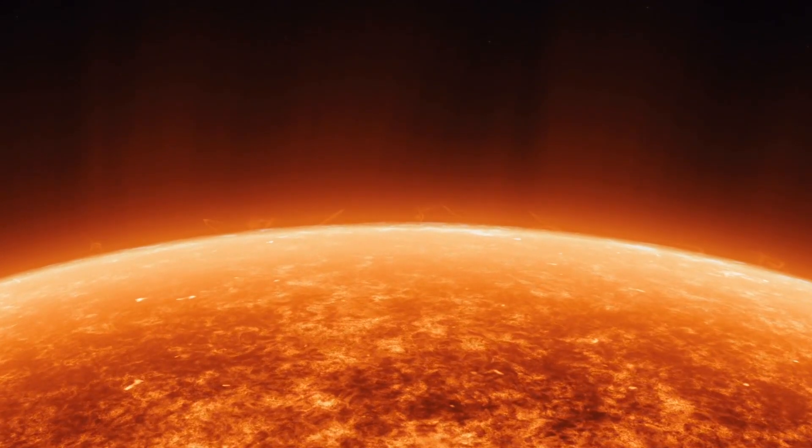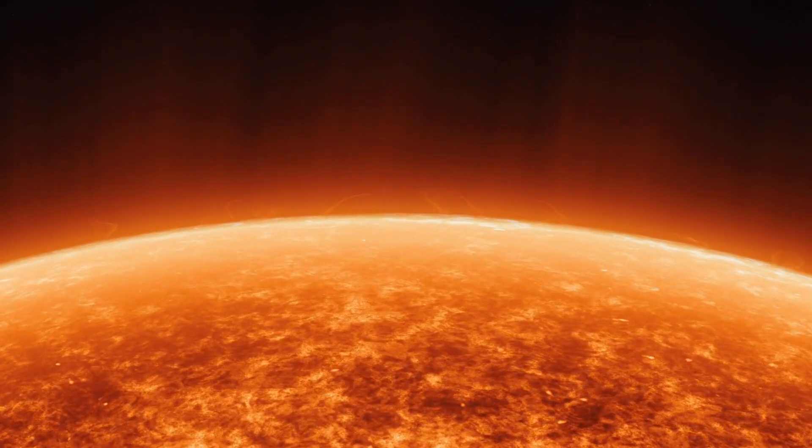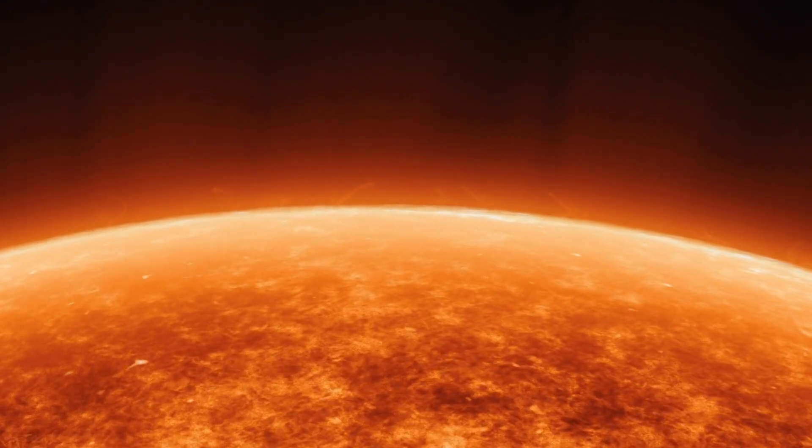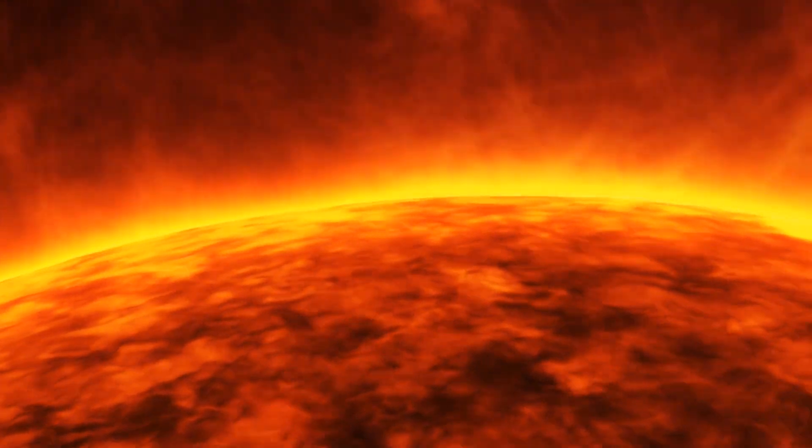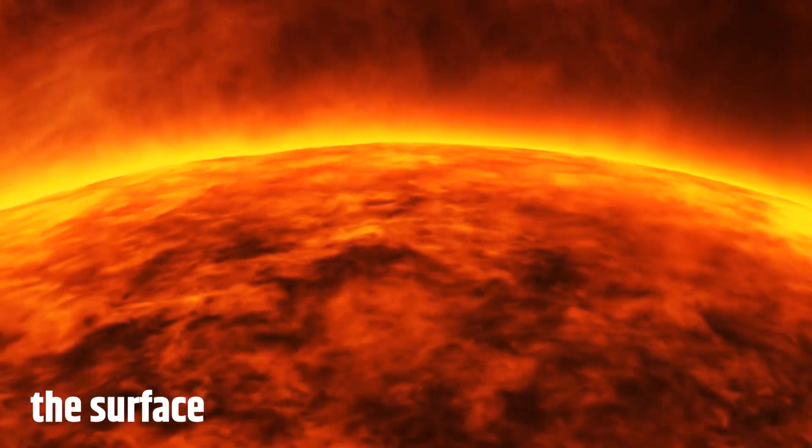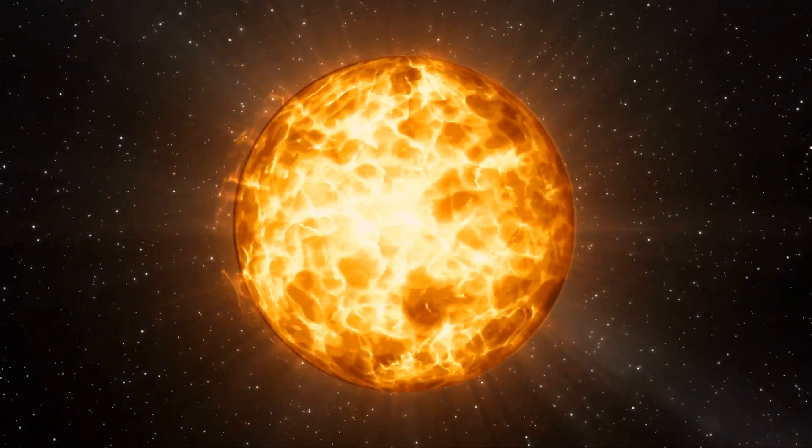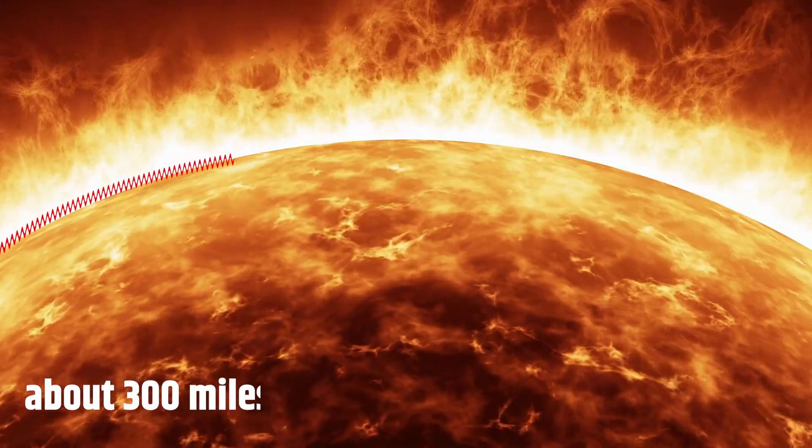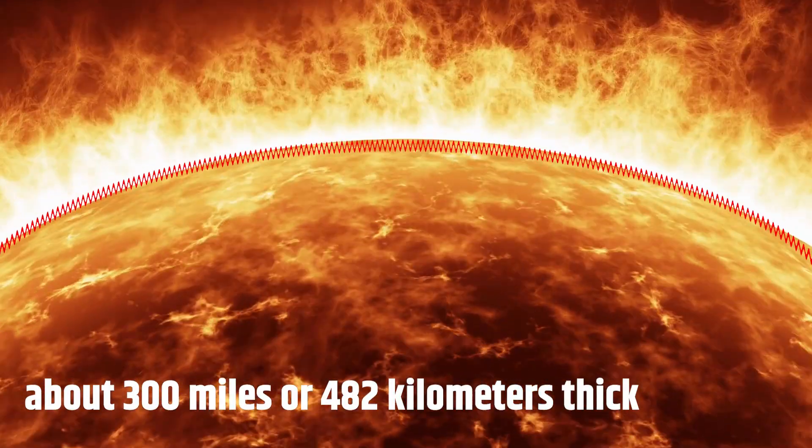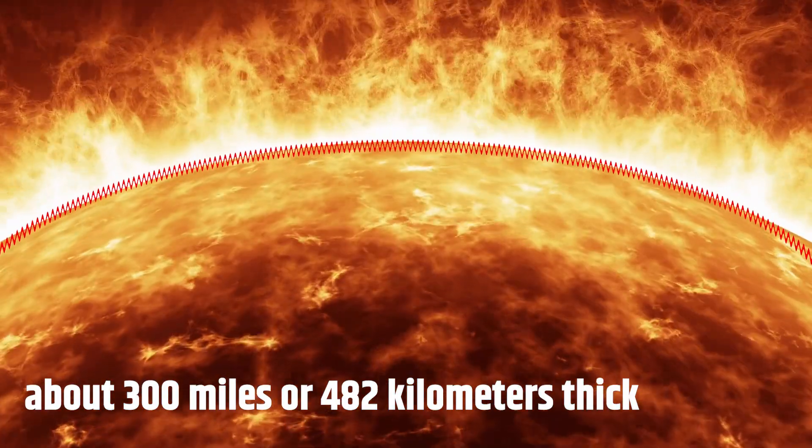Let's now talk about the layer that we can see from Earth, which is the lowest part of the sun's atmosphere, called the photosphere. We want to inform you that the photosphere is often referred to as the surface of the sun. Although it doesn't have a solid surface like rocky planets, this thick outer layer, about 300 miles or 482 kilometers thick, contains hot plasma.